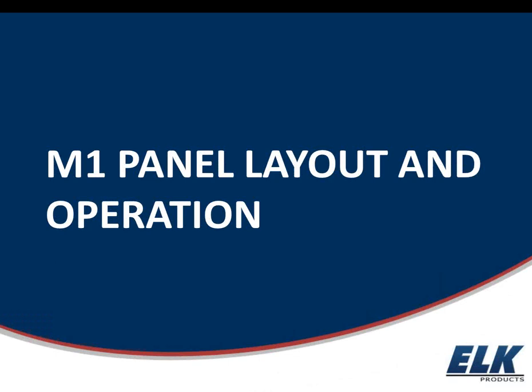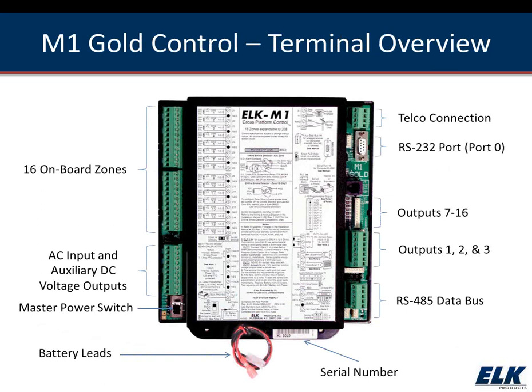Now we're going to talk about the M1 panel layout and the operation of each thing on the panel itself. We'll take time to talk about each side of the board in greater detail - this is just an overview. One important point is the serial number, located at the bottom of the M1 panel to the right of the battery leads. It's an eight-digit code starting with a couple of zeros, and we'll need that for the programming software later.